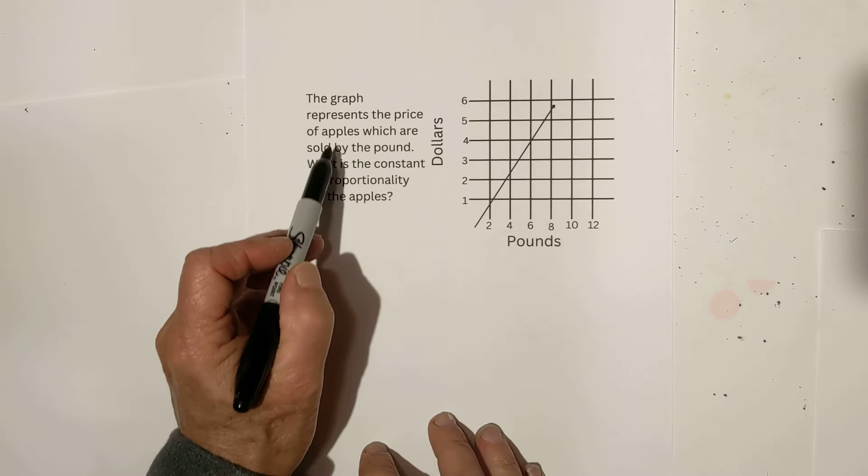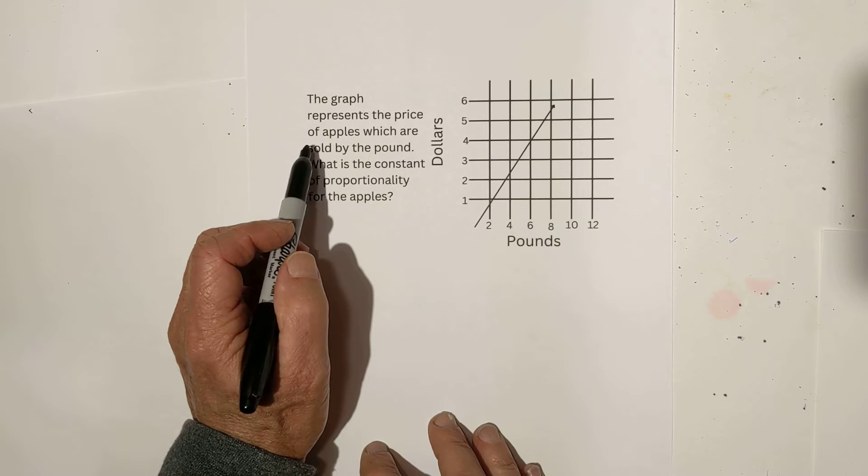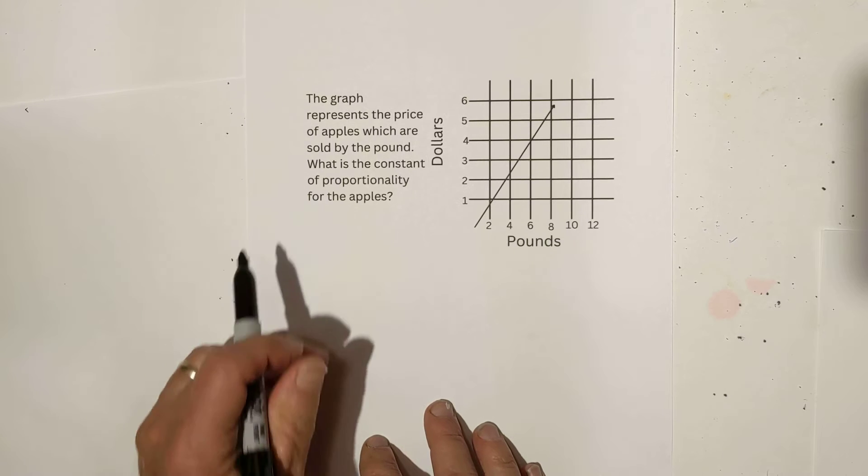This time, we're going to shop for apples. The graph represents the price of apples which are sold by the pound. What is the constant of proportionality?